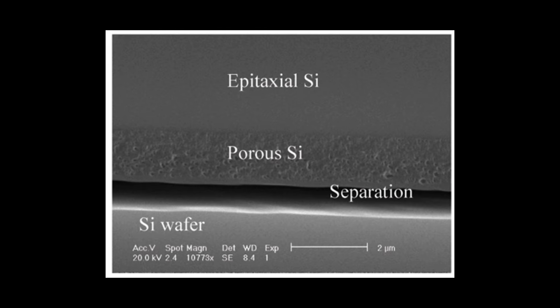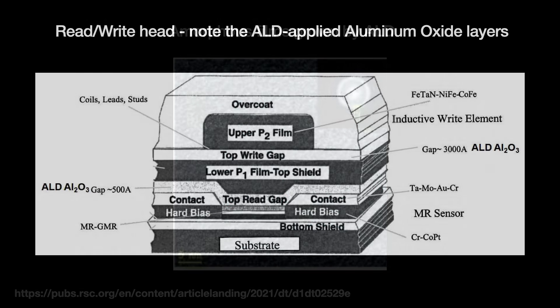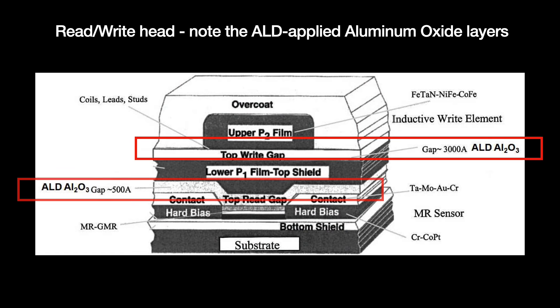People soon realized that the technique was better suited for depositing non-crystalline layers, called amorphous layers — amorphous layers of dielectrics, or insulators, for instance. Such a thing became ALD's second major commercial application when the hard drive industry adopted it to deposit thin layers of aluminum oxide onto the read-write heads of their disk drives.